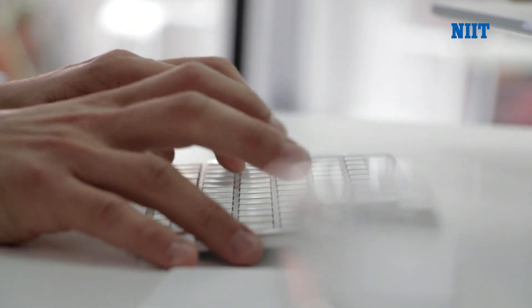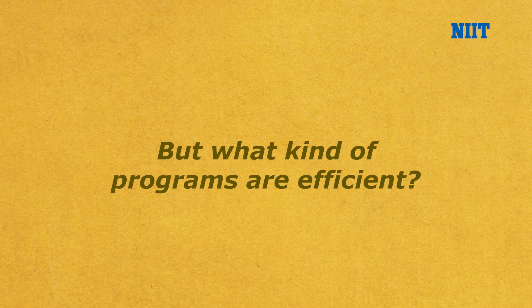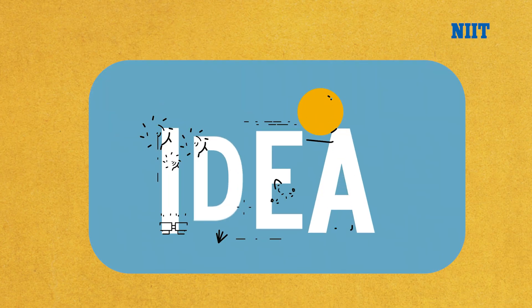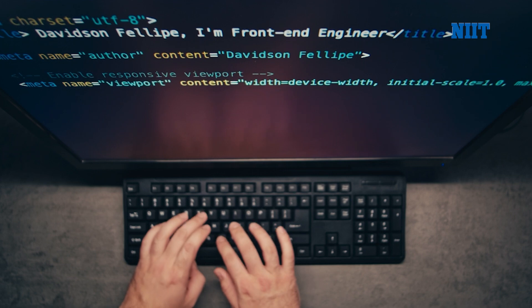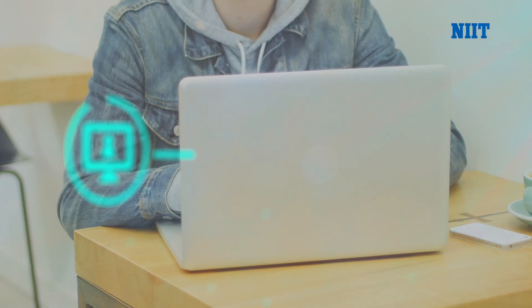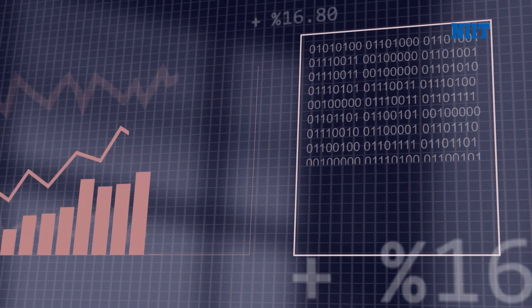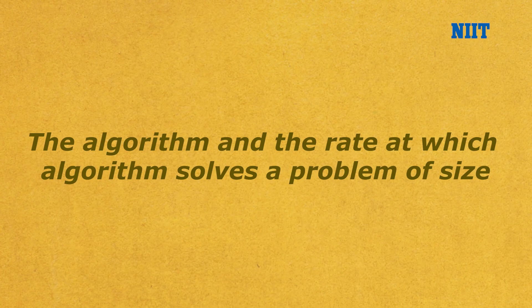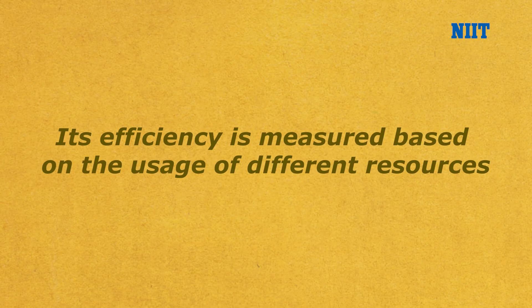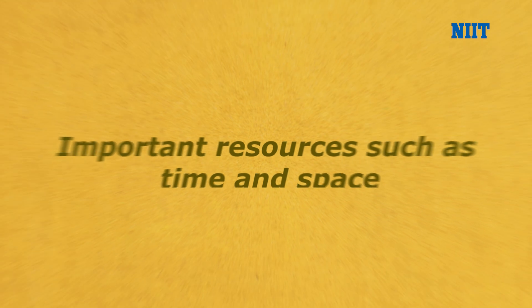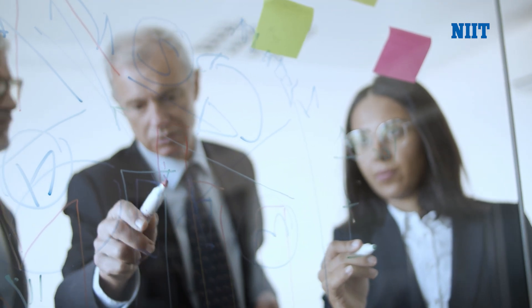Now, what makes an algorithm efficient? Writing efficient programs is what every programmer hopes to be able to do. But what kind of programs are efficient? How do you generalize efficiency? Algorithms are programs in general form, and it means three things: it should be independent of the programming language in which the idea is realized; any programmer with enough knowledge and experience should be able to understand it; and it should be applicable to inputs of all sizes. The efficiency of an algorithm is defined as the number of computational resources used by the algorithm and the rate at which the algorithm solves a problem of size n. To maximize the efficiency, you need to minimize the resource usage.